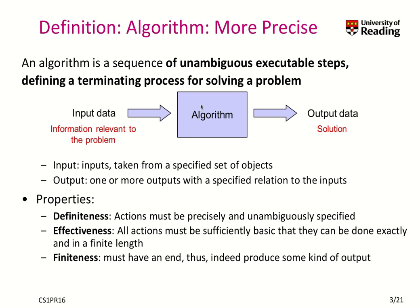Let's decipher this definition. We can extract three properties that are important: definiteness, effectiveness, and finiteness. Definiteness means each of the steps the algorithm performs must be precisely specified and unambiguous. Effectiveness means we must be able to perform these actions that are so basic that they can be done in a finite amount of time. And finiteness means we must produce some kind of output.